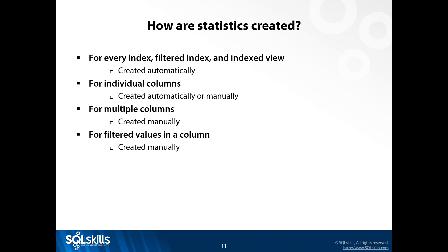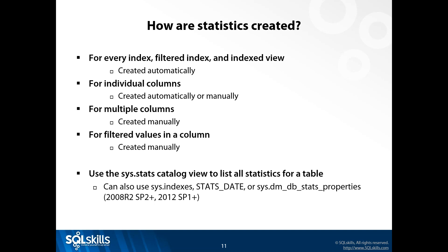You can also get filtered statistics created manually, which are different from a filtered index. A great example of where this is used is in very large tables - think millions or hundreds of millions of rows - where the default histogram doesn't do a great job representing the distribution of data. I can create additional statistics on a column to give the optimizer better information. To view statistics, I'll use sys.stats combined with other catalog views.